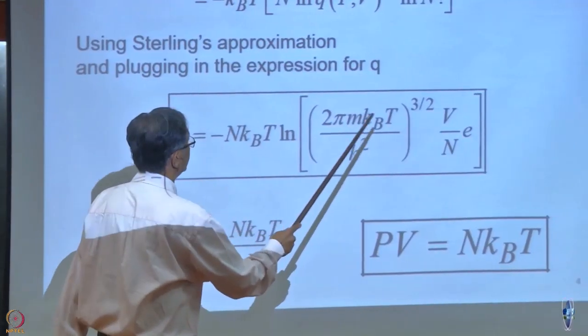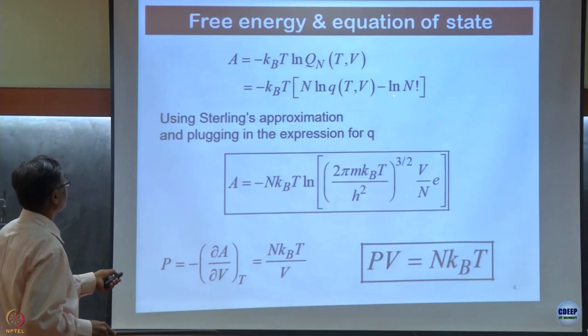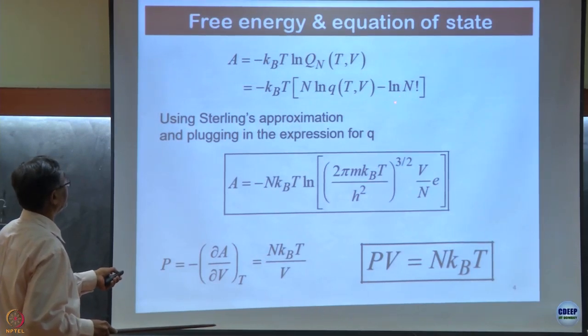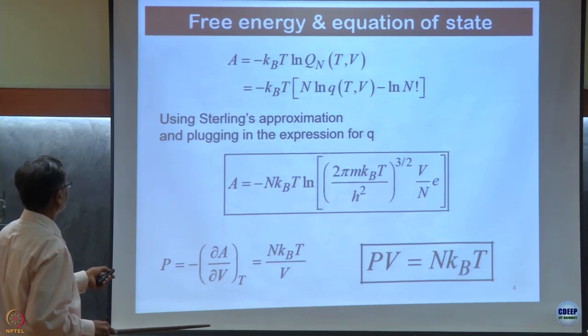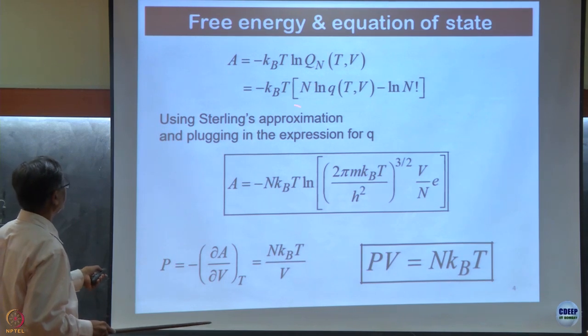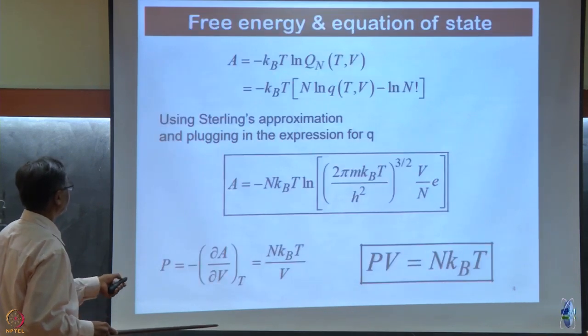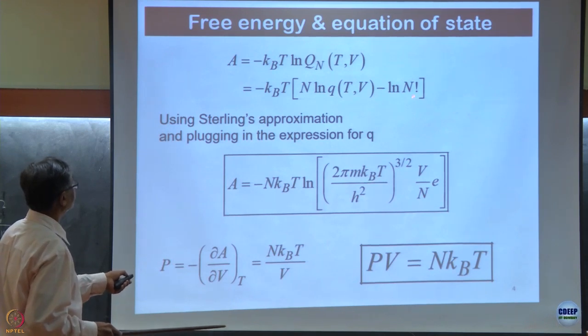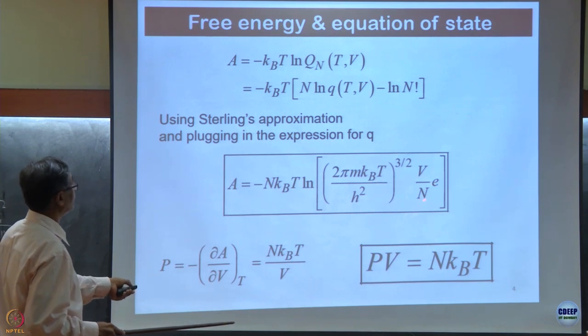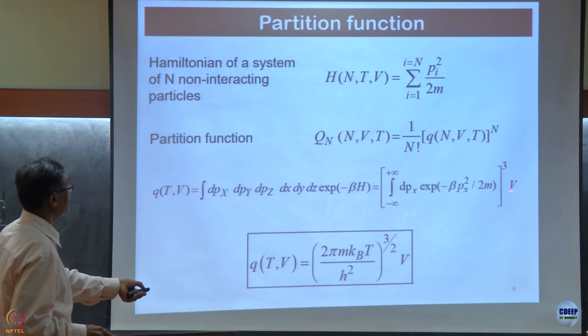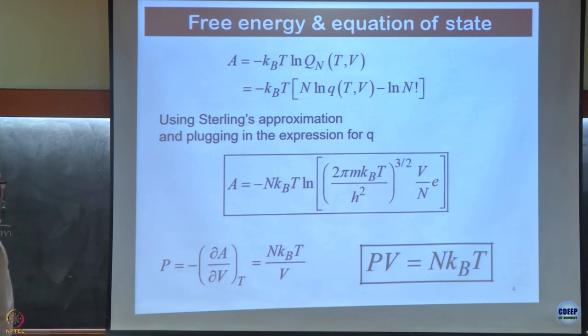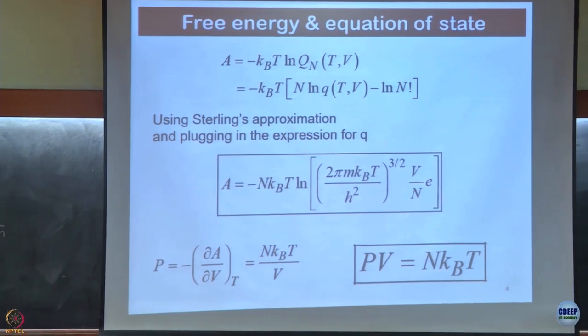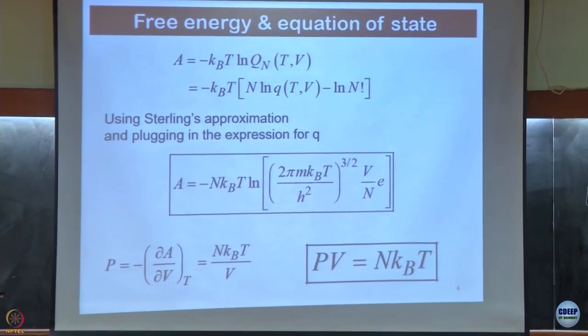So q to the power n has become ln q. These become what we have in the last page. This quantity you have to do n ln n by n e to the power n, all these factors come here and this n becomes n kBT. This factor with h square, everything. This ln v by e, that ln v comes from this v. Stirling's approximation gives this factor v by n to the power e, that plays a very important role as we will see right now.